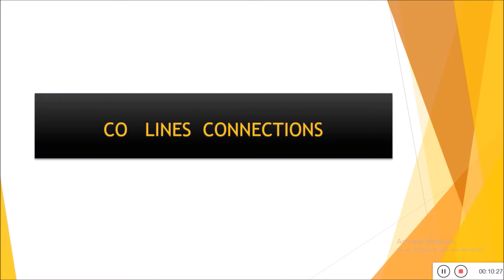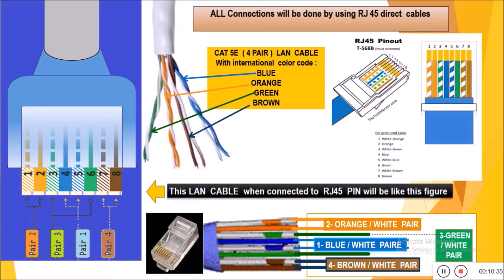Now we go to state how to connect CO lines or external lines. We must state that all connections to our IP PBX are done by using LAN cables — 4-wire LAN cables, Cat5 or Cat6 depending on your existing LAN. Most of us know about the arrangement and configuration of the RJ45 jack; we have stated it here in detail to use in our connection.